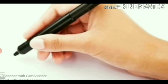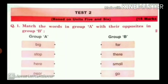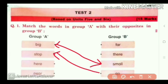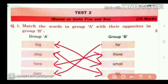So, we will write now. The first question is: match the words in Group A with their opposites in Group B. Group A and Group B is given. We want to match the opposite words. Big will match to small, stop will match to go, here will match to there, near will match to far. So, these are the opposites.